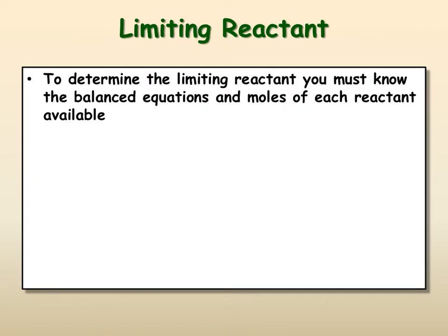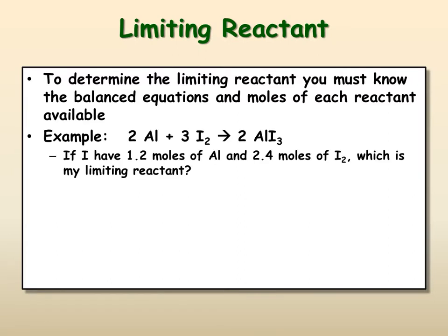So, to determine your limiting reactant, you need your balanced equation and you need to know how much moles of each reactant you have available. An example of this, if we are doing the synthesis of aluminum and iodine to make aluminum iodide. This one, if I have 1.2 moles of aluminum and 2.4 moles of I2, which is my limiting reactant, we're already in moles, so we're just going to use the numbers that we have.